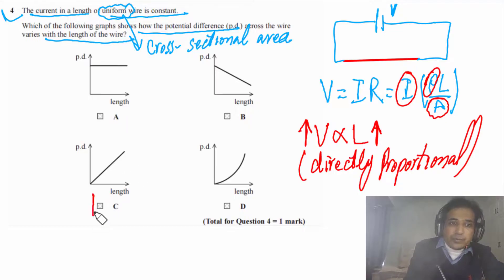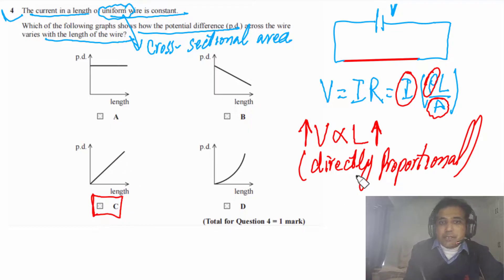Directly proportional means the graph has to be a straight line passing through the origin. So the correct answer is the graph showing a straight line through the origin.